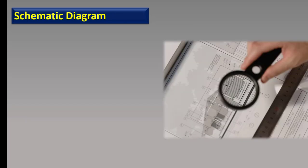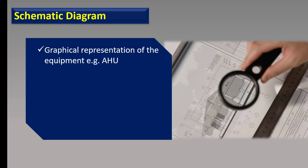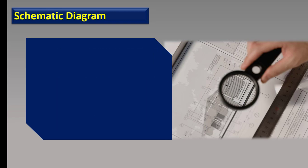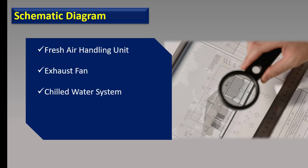So first of all, what is a schematic diagram? It is a graphical representation of the equipment used in BMS — for example, AHU, chillers, exhaust fan, and other equipment. It also provides information about the points connected to the BMS for that equipment and about the types of cables used for the BMS points. In today's video, we will talk about the schematic diagram of a fresh air handling unit, exhaust fan, and chilled water system.